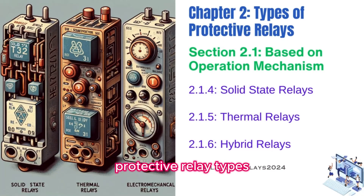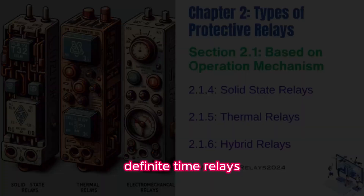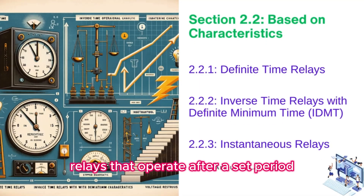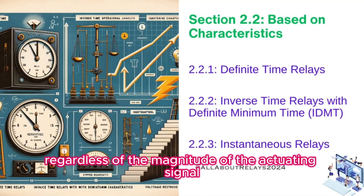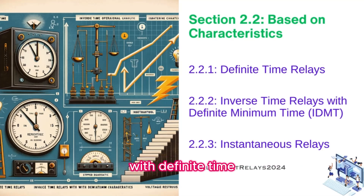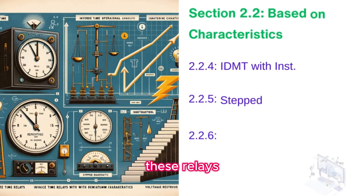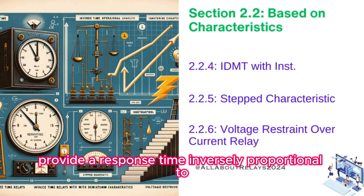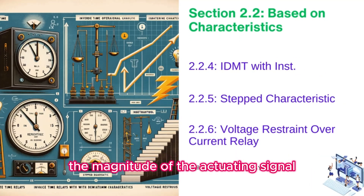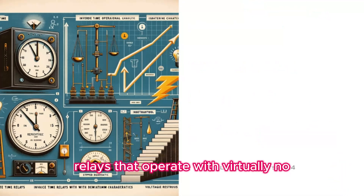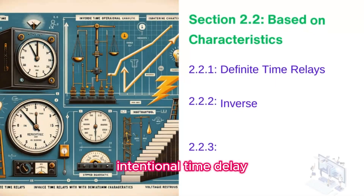Protective relay types based on characteristics. Definite time relays operate after a set period regardless of the magnitude of the actuating signal. Inverse time relays with definite minimum time (IDMT) provide a response time inversely proportional to the magnitude of the actuating signal. Instantaneous relays operate with virtually no intentional time delay.